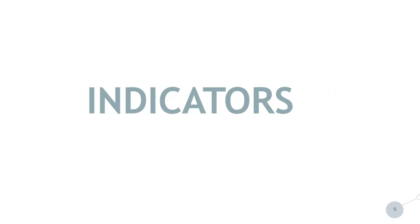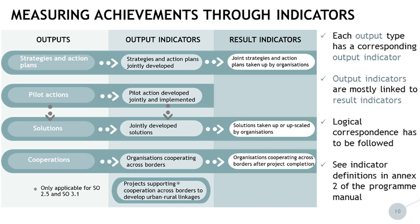Coming now to the indicators, with the main question of how to actually measure the achievements of a project — this is done through a set of indicators. As we were seeing in the previous slides, we have four different output types. For each output type, there is a corresponding output indicator. For example, strategies and action plans have the related output indicator that needs to be selected: strategies and action plans jointly developed. In the same logic, there is also a related result indicator, as shown in this visualization.